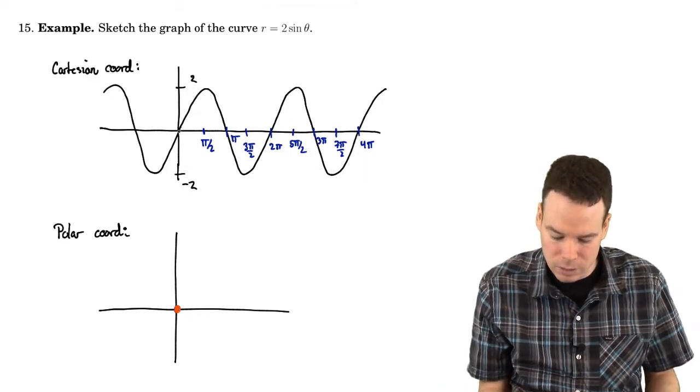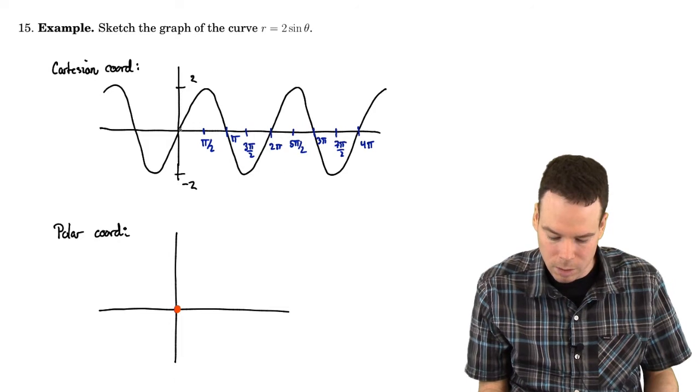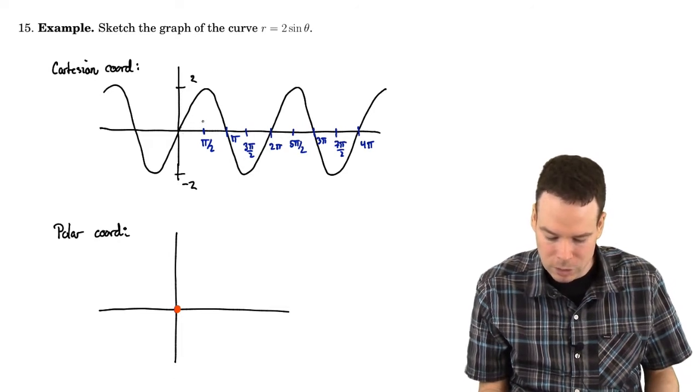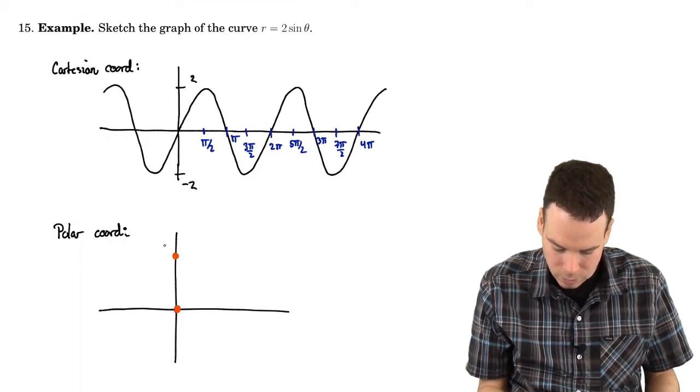Now as theta increases, my r value increases. So that when theta hits pi by 2, my r value is 2. So I'm going to end up here, having an r value of 2.